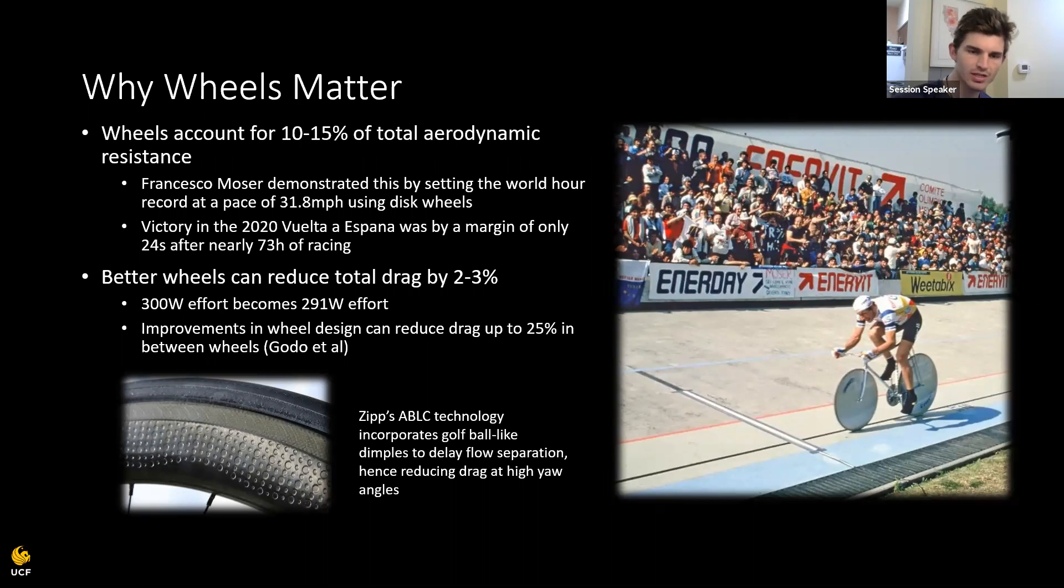So why do wheels matter? Well, wheels account for 10 to 15% of total aerodynamic resistance. Francesco Moser demonstrated this by setting the world hour record at a pace of 31.8 miles per hour using disc wheels like you see in the bottom right hand corner. And even this year, the victory in the 2020 Vuelta a España was a margin of only 24 seconds after 73 hours of racing. And this was between Primoz Roglic and Richard Carapaz. So better wheels can reduce the total drag by up to two to three percent. So a 300 watt effort could become a 291 watt effort, for example. And improvements between wheels can reduce drag up to 25 percent. And this is just down to how the wheel's designed. So you see an example of an improved wheel design by Zip, who uses ABLC technology to incorporate these golf ball-like dimples, which delay flow separation, hence reducing drag at high angles of attack.